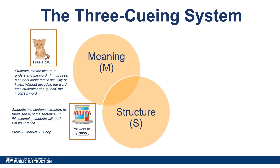For example, in the following sample book page, it reads: 'Pat went to the blank.' The blank represents the word the student does not know. The student will know that the blank should be filled with a place or noun because of the structure of the sentence as well as the supporting picture. The trouble with using this strategy is that without using letter-sound correspondence to decode the word, students could fill in the blank with store, market, or shop. When sounding out the word, the student would know that the actual word in the sentence is shop. Decoding the word is always the first and best strategy to use when students encounter an unknown word in text.